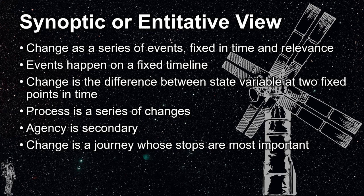Synoptic change consists of events that happen along a fixed timeline, and change is the difference in some state variable from the first time point, T1, to some second time point, T2. In this view, process is defined as a series of changes, and agency by change agents is a secondary phenomenon.